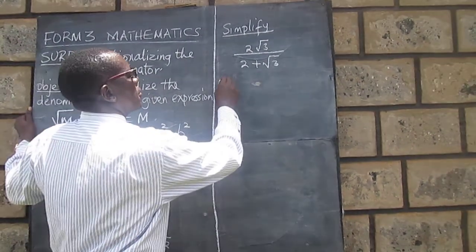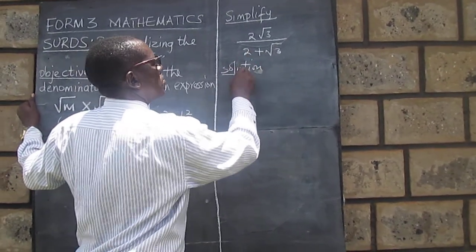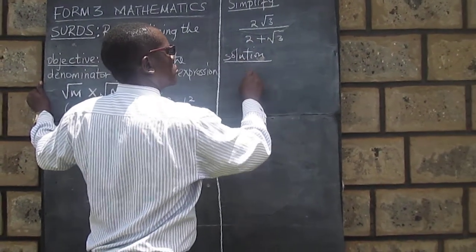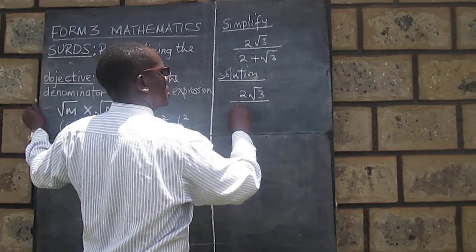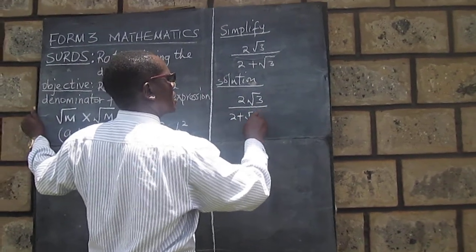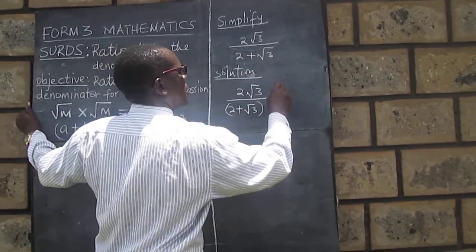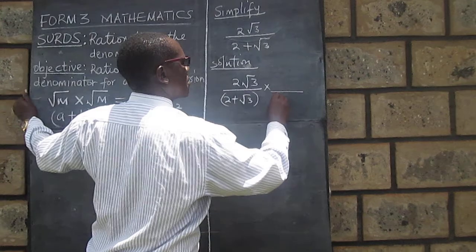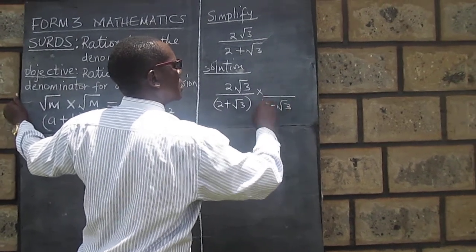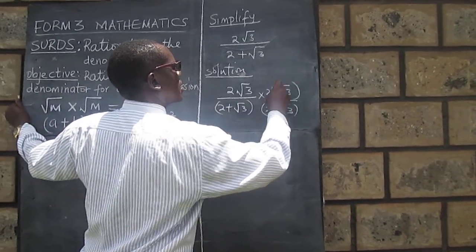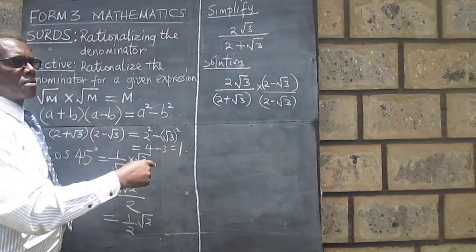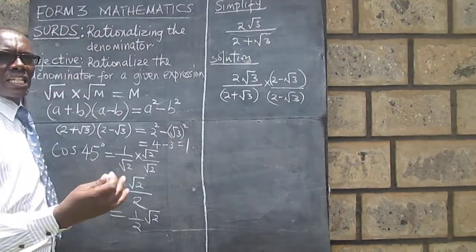And therefore in our solution, we will now say 2√3 over (2+√3), here we multiply by (2-√3), and here by (2-√3), so that we end up multiplying by 1 and therefore changing nothing.